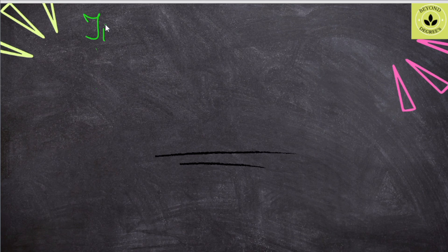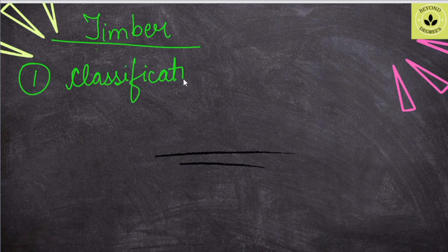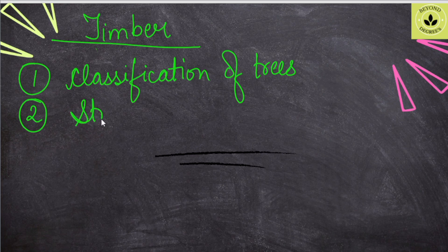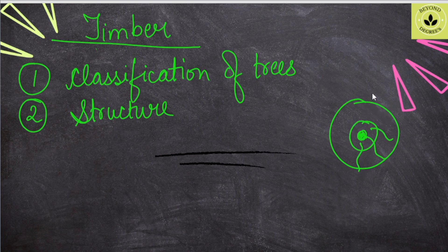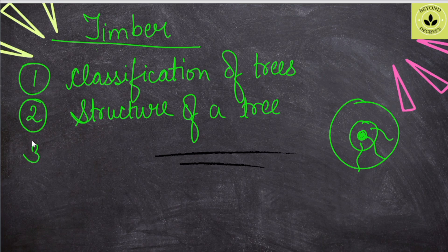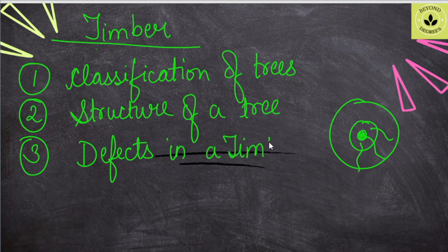The next important topic is timber. In timber, we talk about classification of trees: endogenous or exogenous, deciduous or evergreen — classification of trees and their examples are very important. For example, bamboo falls in a particular category. Structure of the tree is also important — what is a ring, the inner part, medullary rings, inner bark, cambium layer, sapwood — all the functions and structure of the tree. Defects of timber is a very important topic that comes every time in both prelims and mains.